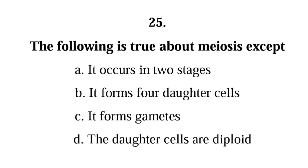Question 25: The following is true about meiosis EXCEPT — A. it occurs in two stages, B. it forms four daughter cells, C. it forms gametes, D. the daughter cells are diploid. The correct answer is D; the daughter cells in meiosis are not diploid, they are haploid.